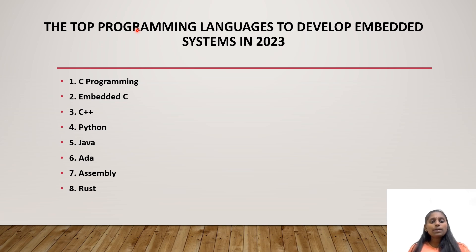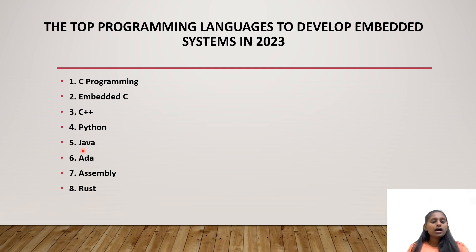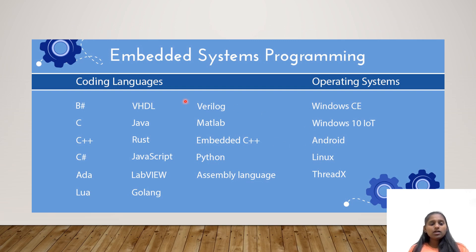The top programming languages to develop Embedded Systems in 2023 are: C Programming, Embedded C, C++, Python, Java, Ada, Assembly, and Rust. These are the important programming languages used in Embedded Systems programming.